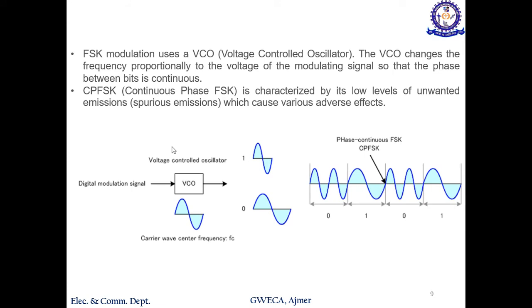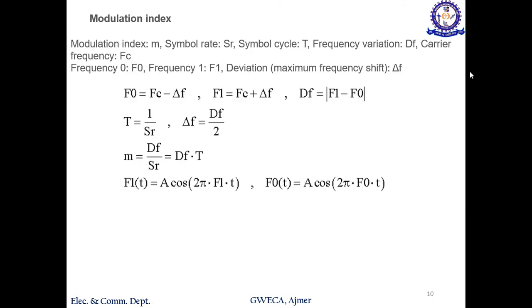This can be eliminated by using, instead of two different oscillators, a voltage controlled oscillator (VCO). In FSK modulation using VCO, the voltage controlled oscillator changes the frequency proportionally to the voltage of the modulating signal, so that the phase between bits is continuous. In this case there will be continuous phase with no discontinuity between the two points. So CPFSK (Continuous Phase Frequency Shift Keying) characterizes low level of unwanted emission, which causes various adverse effects. In this way we have removed the effect of spurious emission.